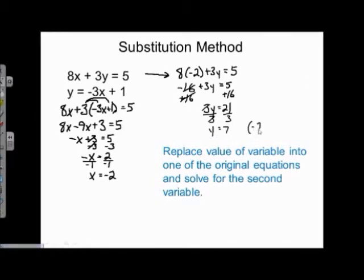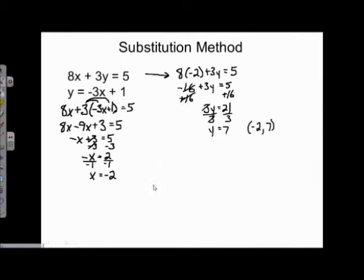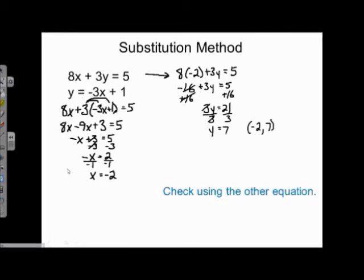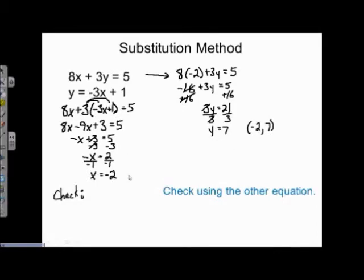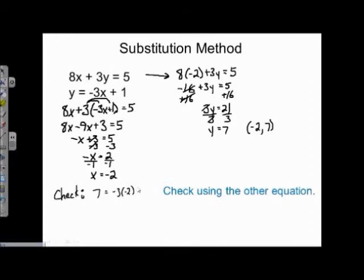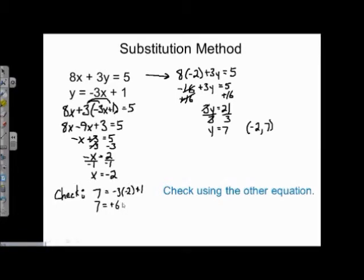If we've done this correctly, these two lines would cross when x is negative 2 and y is 7. Next, we check using the other equation. I used the first equation to find y, so I'll check using the second: y equals negative 3x plus 1. Substituting in, 7 equals negative 3 times negative 2 plus 1. Negative times negative is positive, so 3 times 2 is 6, plus 1 equals 7. Seven equals 7 — check. There you have it. Check out our other videos and thanks for watching.